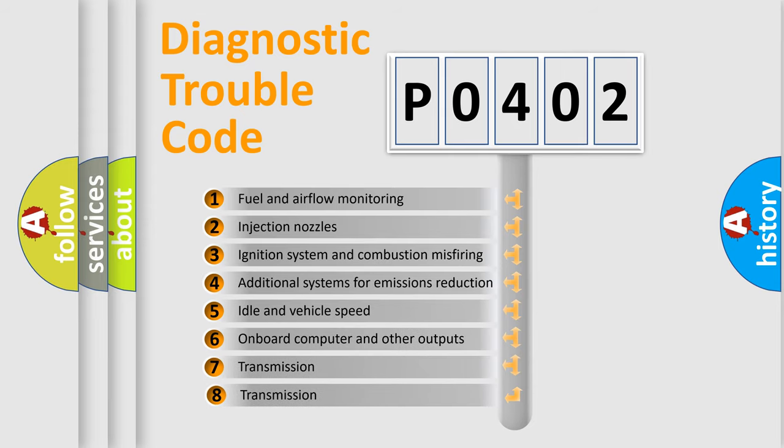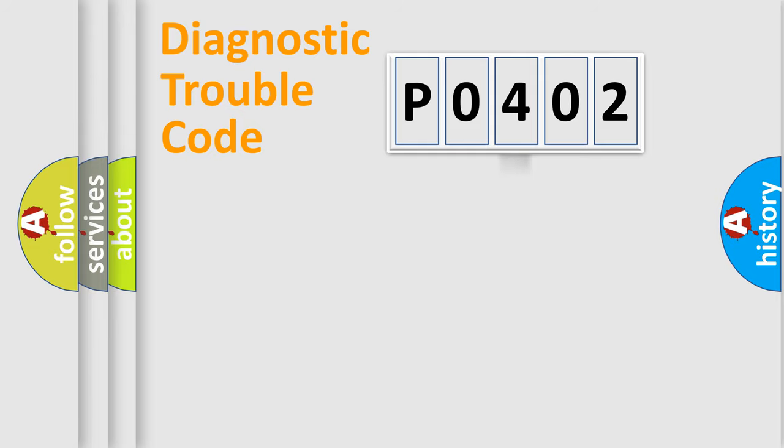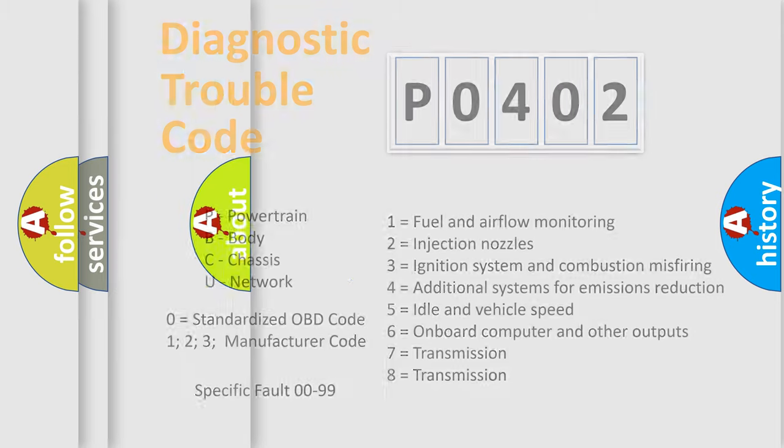The third character specifies a subset of errors. The distribution shown is valid only for the standardized DTC code. Only the last two characters define the specific fault of the group. Let's not forget that such a division is valid only if the second character code is expressed by the number zero.